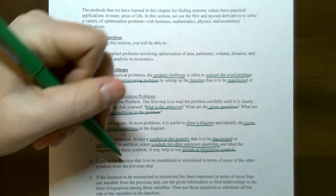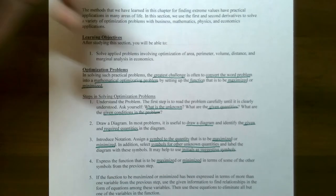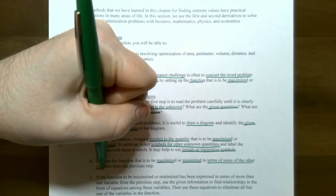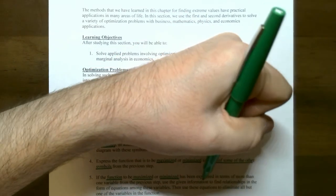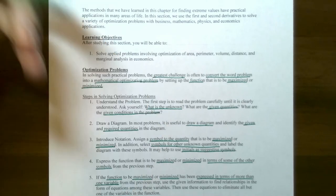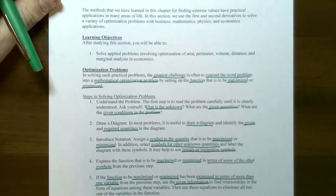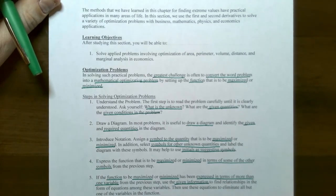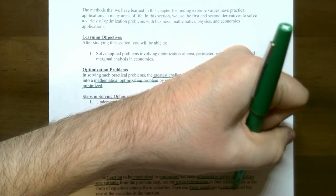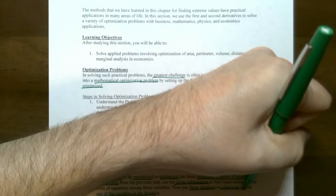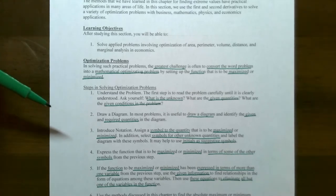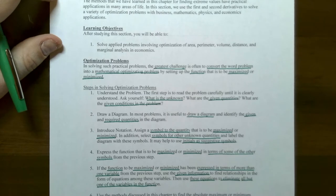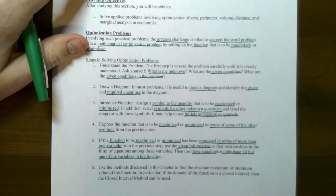Step four: you have a function that needs to be maximized or minimized. Try to express the function in terms of the symbols or variables from the last step. If it involves more than one variable, use additional information in the problem to relate the variables together and eliminate all but one variable. We want the function to be in terms of only one variable, and this is not the same as related rates — there is no change in time in these problems.